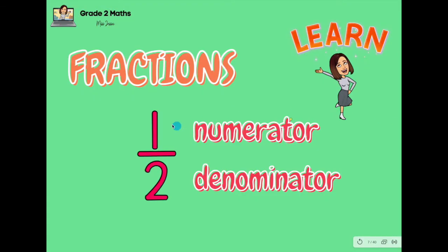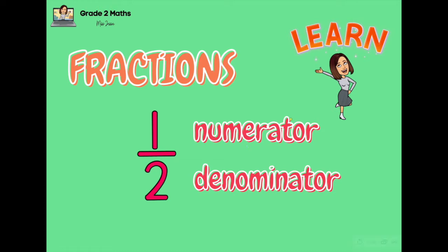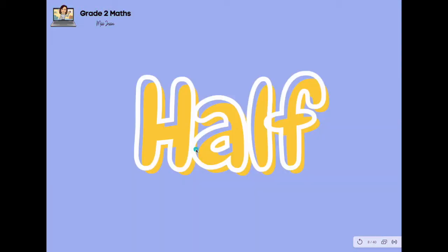Look, I have here an example of a fraction. We call it one half. The number above is the numerator, and the number below is the denominator. The numerator tells about how many fraction pieces there are. The number below is the denominator.